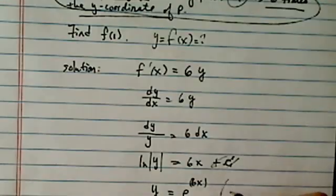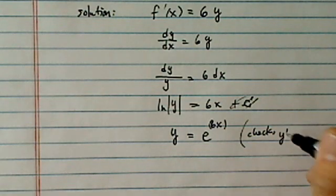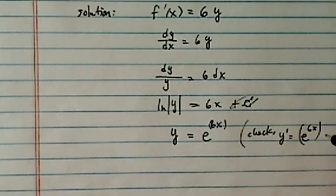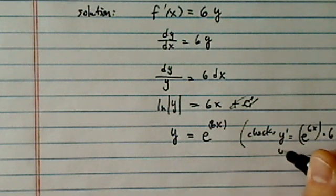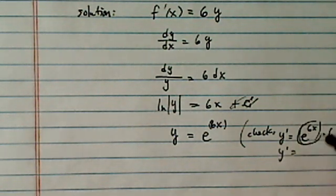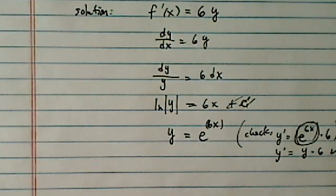Now let's check on the side because we know what f prime is supposed to be. So y prime is equal to e to the 6x, doesn't change, times 6. y prime is equal to, this chunk is equal to y, times 6. Okay, so it does work out the way we want it to do.